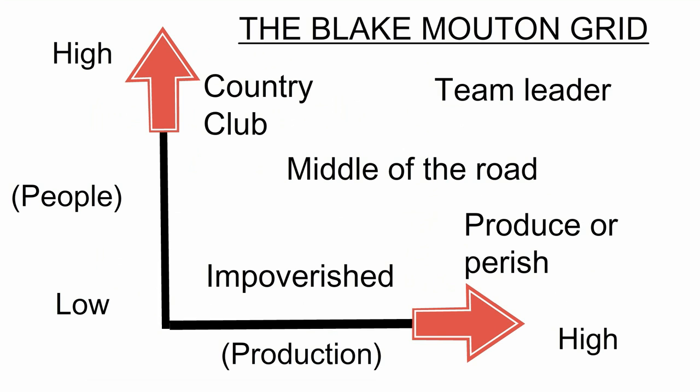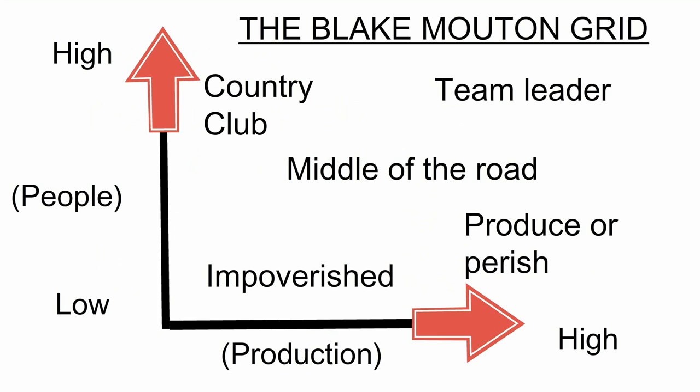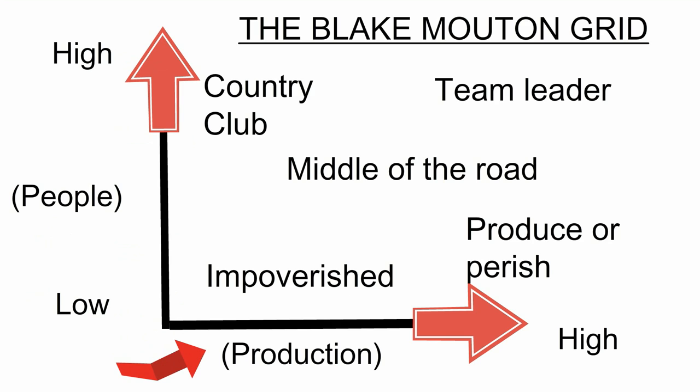Five different leadership styles were compared by plotting them on a two-dimensional scale. One dimension is concern with people. A manager who has high levels of concern with people will be very focused on ensuring staff like their jobs and are happy at work, with a big emphasis on career development opportunities. The second dimension is concern for production. A manager with high production concerns fully recognises the need for operational targets and keeping costs down.